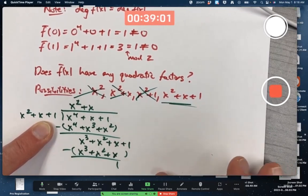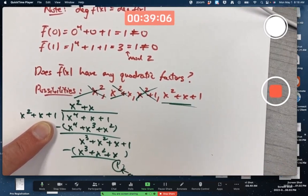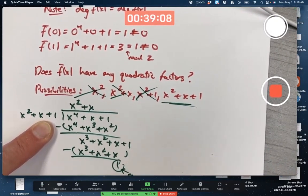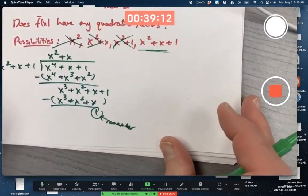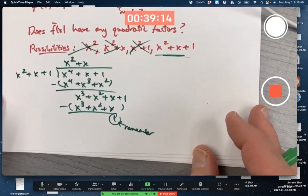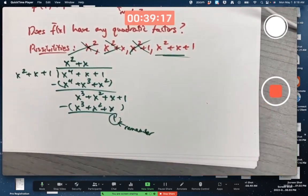And that's now a lower degree than the one I'm dividing by. That's the remainder. And it's a non-zero remainder. That's the remainder. It's a non-zero remainder. So x squared plus x plus 1 is not a factor of our original polynomial.